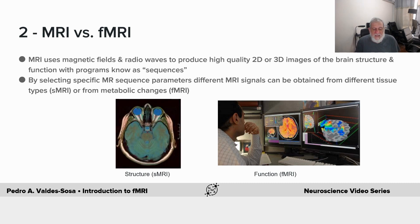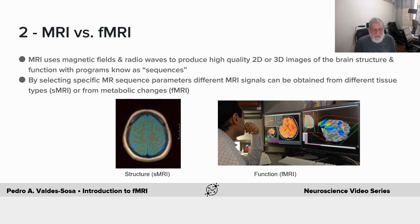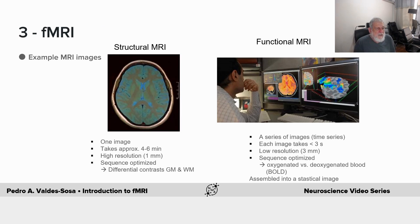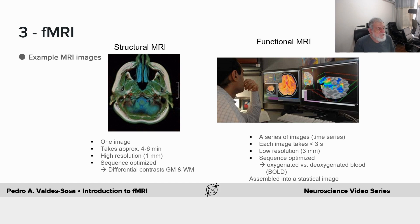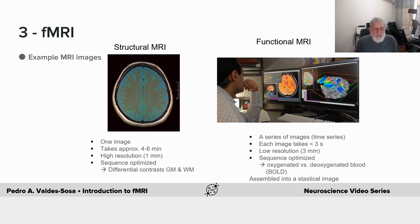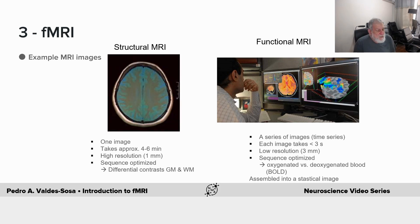There are many different types of MRI sequences, and they are still being discovered and crafted at this moment. Structural MRI takes usually one image — 2D or 3D — over four to six minutes. It is very high resolution.